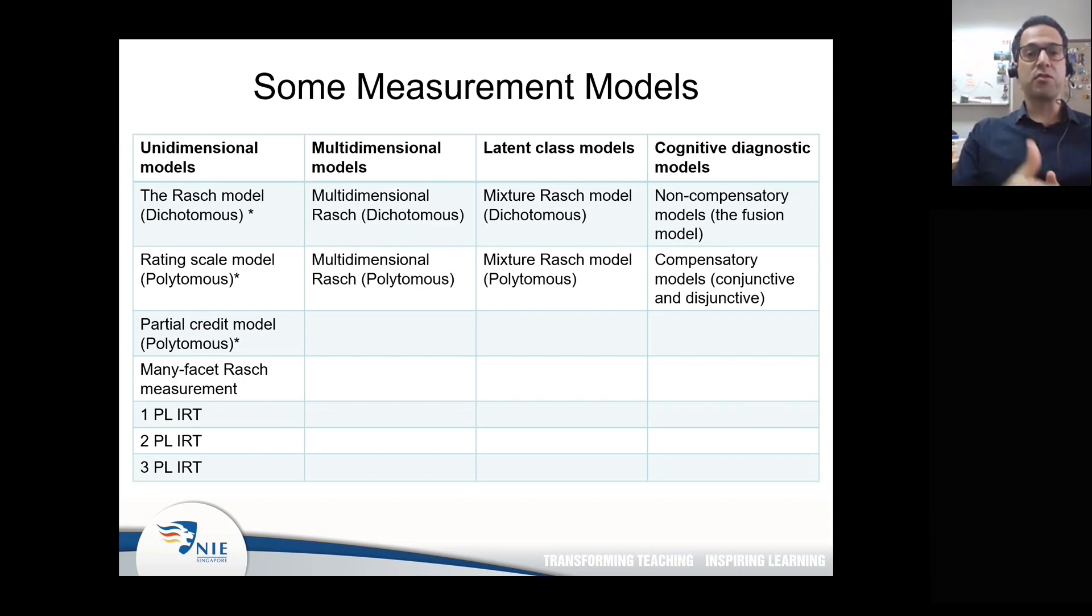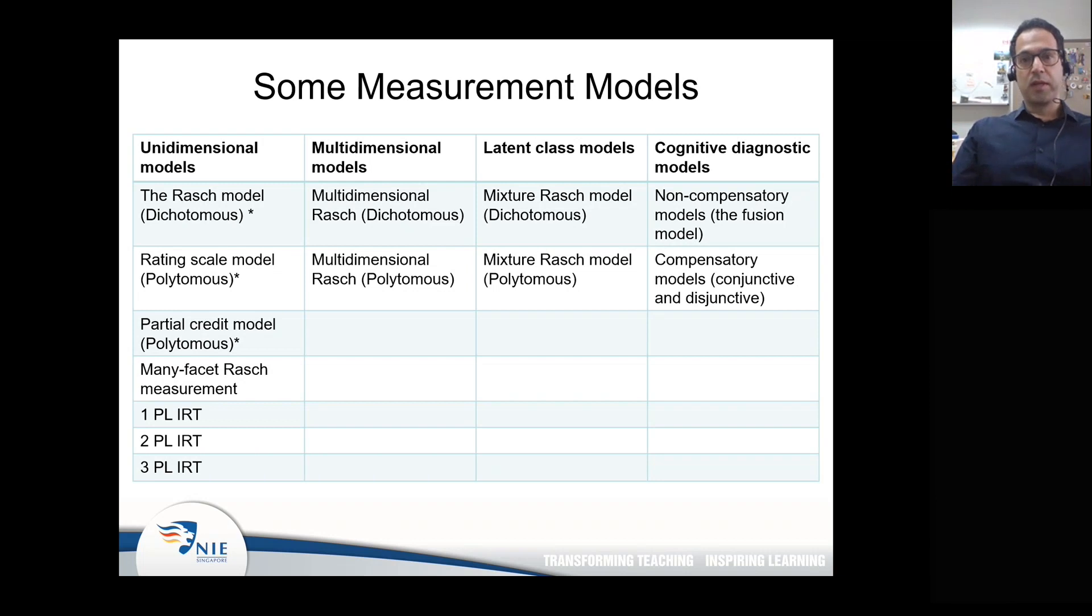These are applicable to both polytomous and dichotomous data. More recently, their multidimensional forms have also been developed, so it makes Rasch measurement a more complex or sophisticated way of looking at questionnaire data or test data. Finally, there's another group which goes by the name cognitive diagnostic models, and there are different types like non-compensatory and compensatory models. Under compensatory models, we have conjunctive and disjunctive models and so on and so forth.